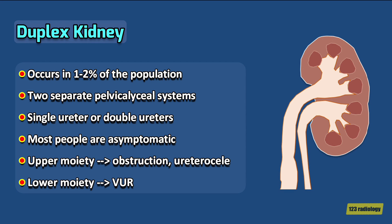Duplex kidney is a common congenital renal anomaly. It occurs in about 1-2% of the population. In a duplex kidney, the kidney has two pelvicalyceal systems that are associated with a single ureter or with double ureters. Most duplex kidneys are asymptomatic and diagnosed incidentally.